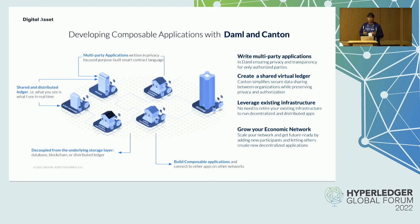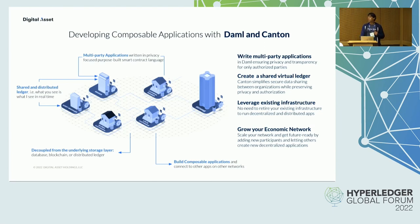Adding new applications and participants makes the applications composable. Adding new Canton domains makes the network composable. Now let's look a little closer at DAML and Canton.